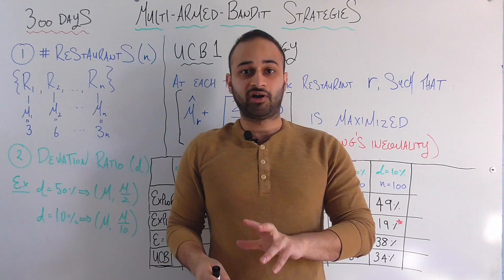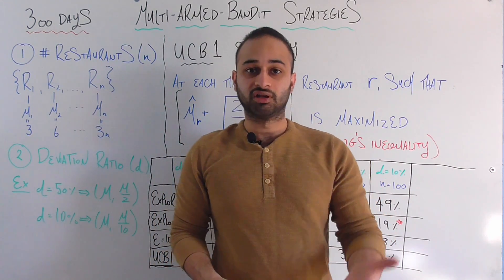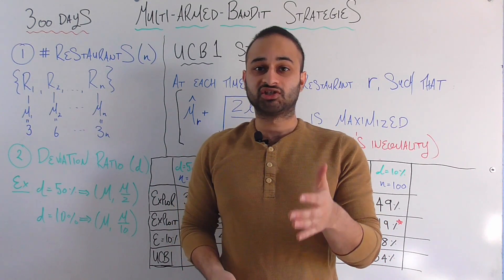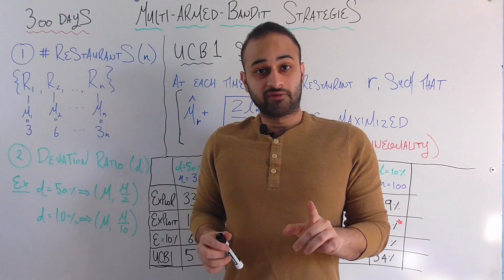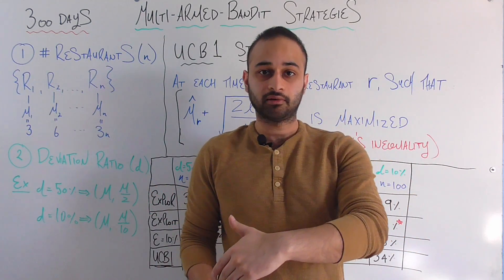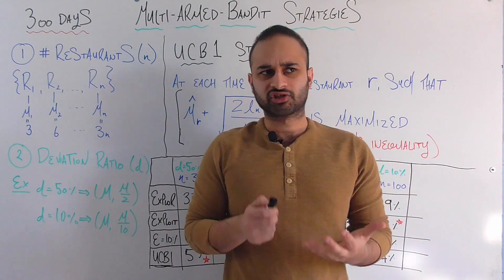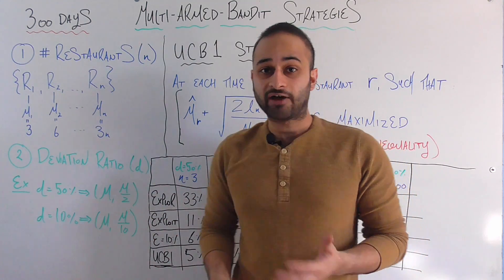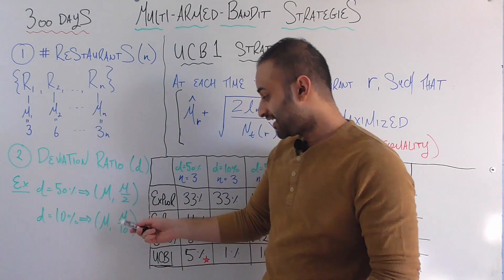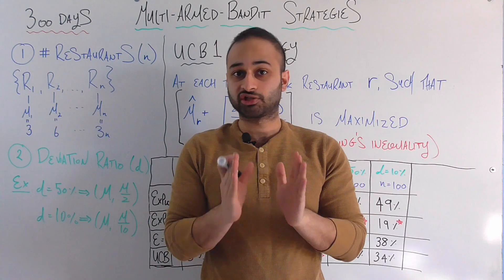The other parameter we're going to vary is the exact shape of these distributions. I only told you about the mean — I didn't tell you about the standard deviation. We're going to assume these are Gaussian or normal distributions. The parameter d gives the standard deviation as a fraction of the mean. For example, if d equals 50%, the standard deviation at every restaurant is half its mean. If d equals 10%, the standard deviation is a tenth of its mean. A higher d means fat distributions with long tails and more uncertainty; a lower d means narrow distributions with less uncertainty.